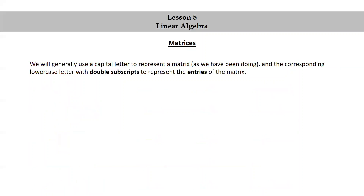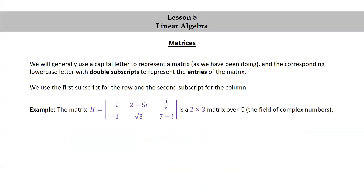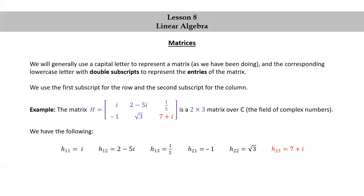We will generally use a capital letter to represent a matrix and the corresponding lowercase letter with double subscripts to represent entries. The first subscript denotes the row, the second the column. For the matrix H = [i, 2-5i, 1/5; -1, √3, 7+i], which is 2 by 3 over ℂ: H₁₁ = i, H₁₂ = 2-5i, H₁₃ = 1/5, H₂₁ = -1, H₂₂ = √3, H₂₃ = 7+i.